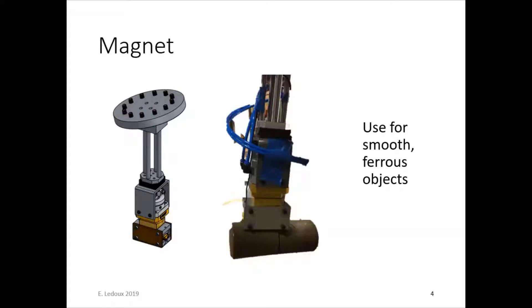The magnet is used for smooth ferrous objects. So ferrous means it's magnetic, and basically the way it works is the magnet can be either electrically or pneumatically activated. So it'll be off until the robot gets close to the part, and then it'll activate. The magnet turns on, then the piece of metal snaps into it, and then the robot will move it to wherever it needs to and turn off the magnet so that it can release the object.